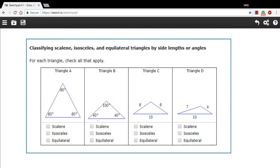In this problem, we are being given either the angles or the side lengths of some triangles, and we're being asked to tell whether they're scalene, isosceles, or equilateral.